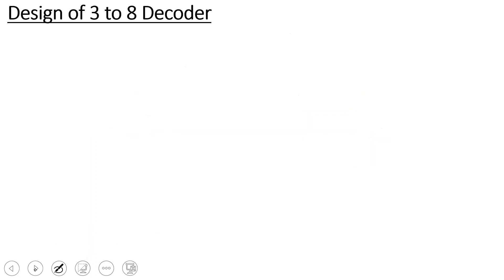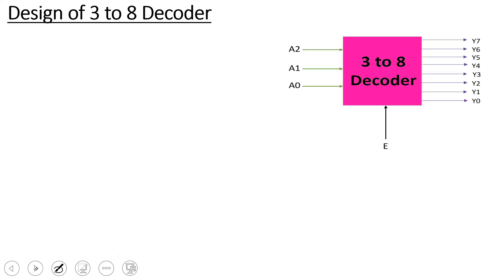Now we have the 3-to-8 decoder design. The number of inputs n is 3. Output is 2 to the power n, that is 2 power 3, which equals 8. This is a 3-to-8 decoder block diagram. Inputs are A2, A1, A0. Outputs are Y0 to Y7. In combination circuit design, the first step is to construct the truth table, giving us 8 boolean expressions, then we go to the logic diagram.